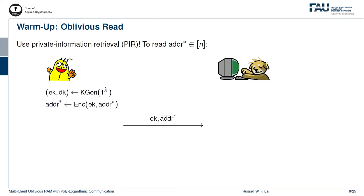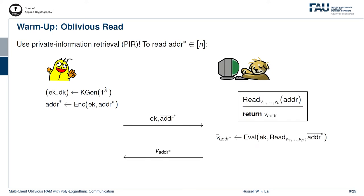As a warm-up, let's see how oblivious read can be done. The idea is to simply use an FHE-based private information retrieval, or PIR, scheme. To read the target address, which we denote by address*, the client samples a fresh FHE key pair, denoted by EK and DK. He then encrypts the target address under EK and sends EK and the ciphertext to the server. Suppose that the database consists of the plaintext values v1 up to vn. The server would homomorphically evaluate a read function over the ciphertext sent by the client. The read function has v1 up to vn hardwired, inputs an address, and simply returns the value indexed by this input address. After the evaluation, the server returns the resulting ciphertext to the client. The client then decrypts this ciphertext and learns the value stored at the target address.